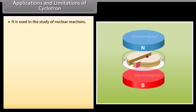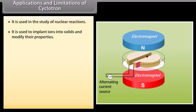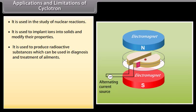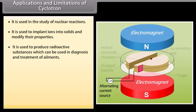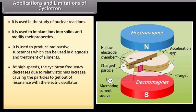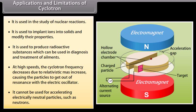Applications and Limitations of Cyclotron: It is used in the study of nuclear reactions, to implant ions into solids to modify their properties, and to produce radioactive substances used in diagnosis and treatment of ailments. A limitation is that at high speeds, the cyclotron frequency decreases due to relativistic mass increase, causing particles to get out of resonance with the electric oscillator. It cannot be used for accelerating electrically neutral particles such as neutrons.